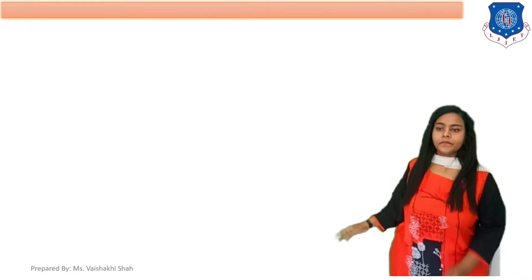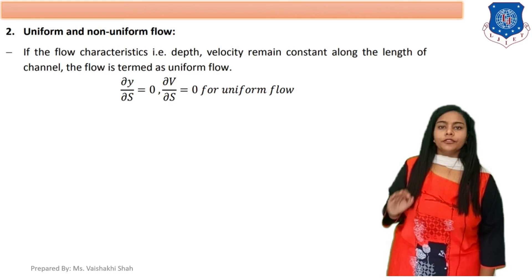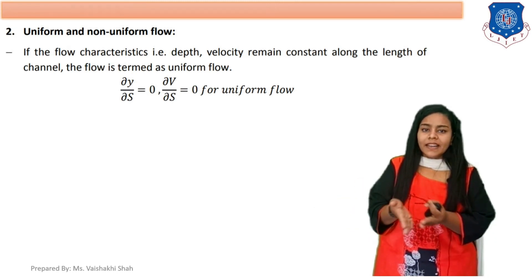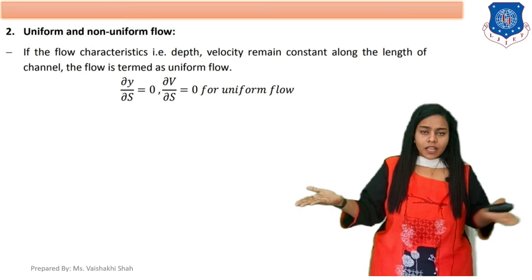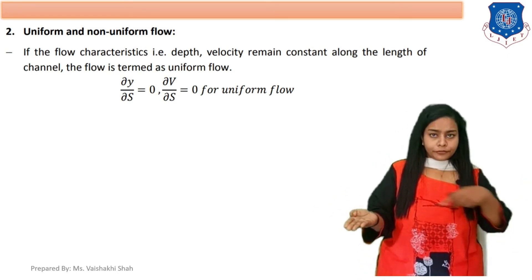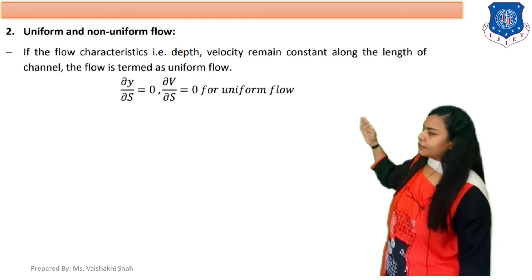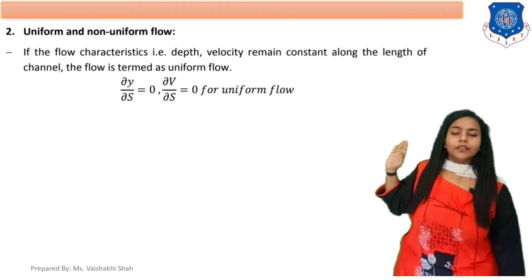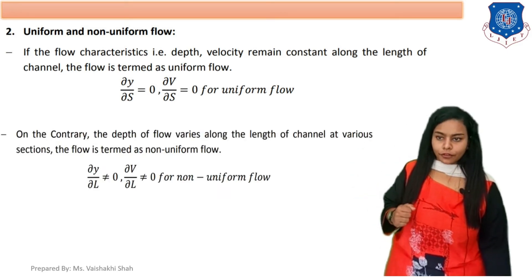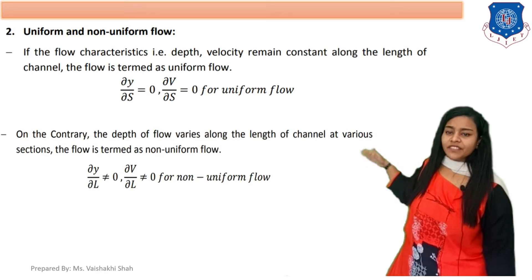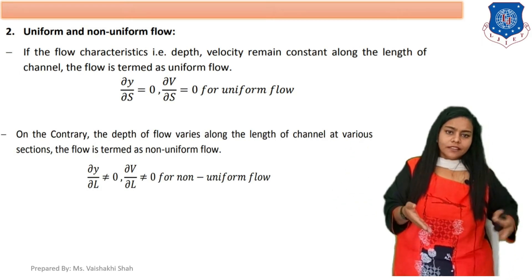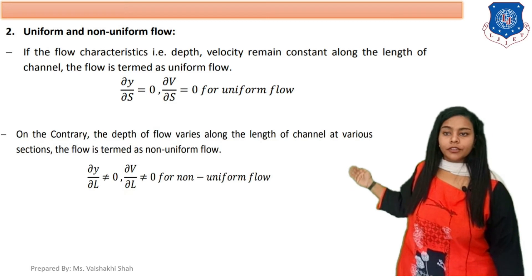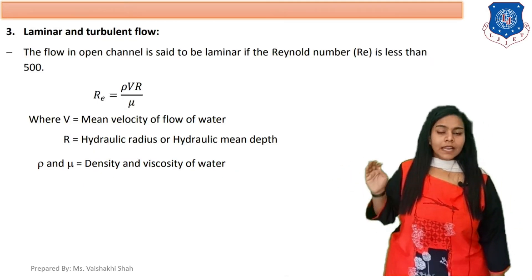The second type is uniform and non-uniform flow. In uniform flow, depth and velocity remain constant along the length of the channel: ∂y/∂s = 0 or ∂V/∂s = 0. In non-uniform flow, velocity or depth varies along the length of the channel: ∂y/∂l ≠ 0 or ∂V/∂l ≠ 0. This is called non-uniform flow.